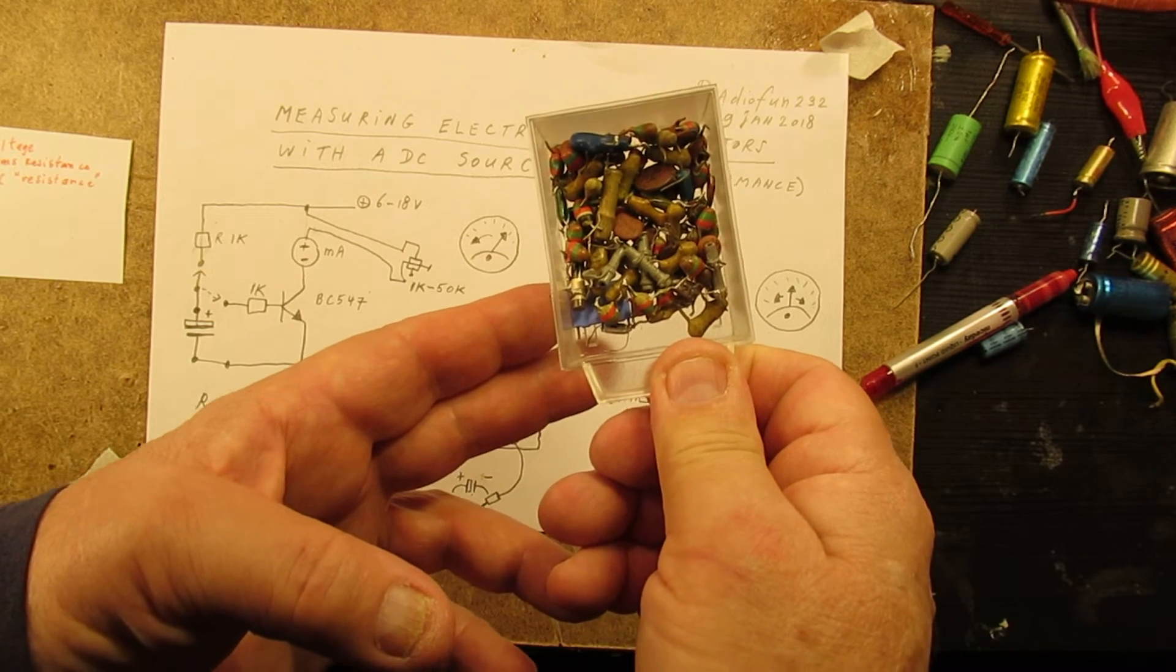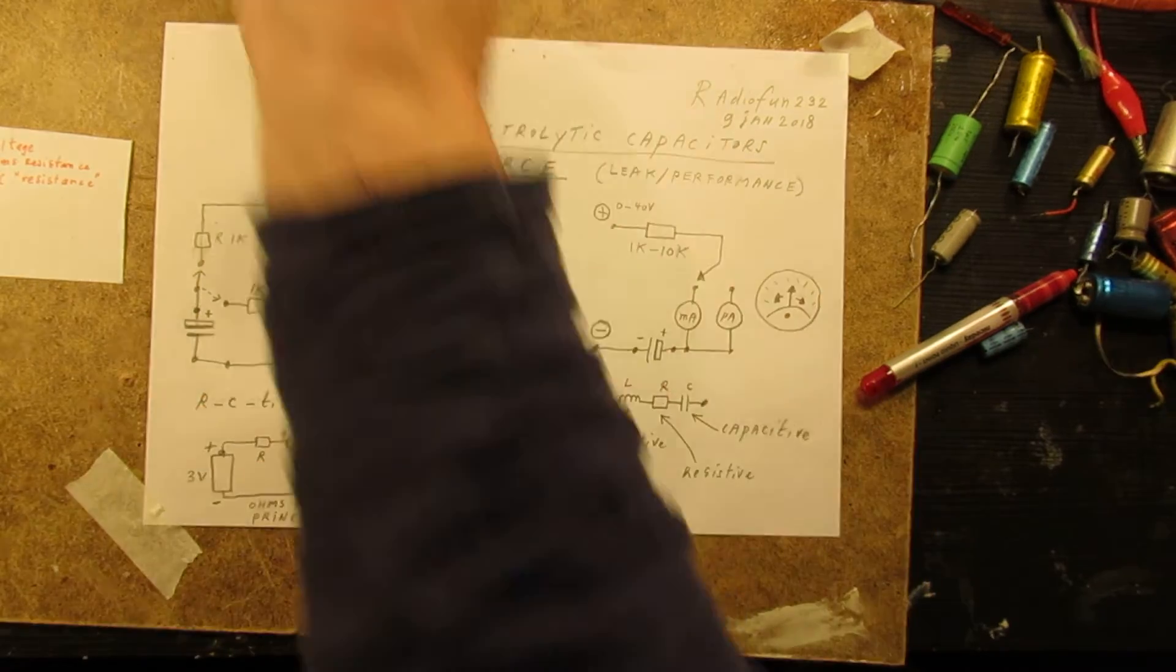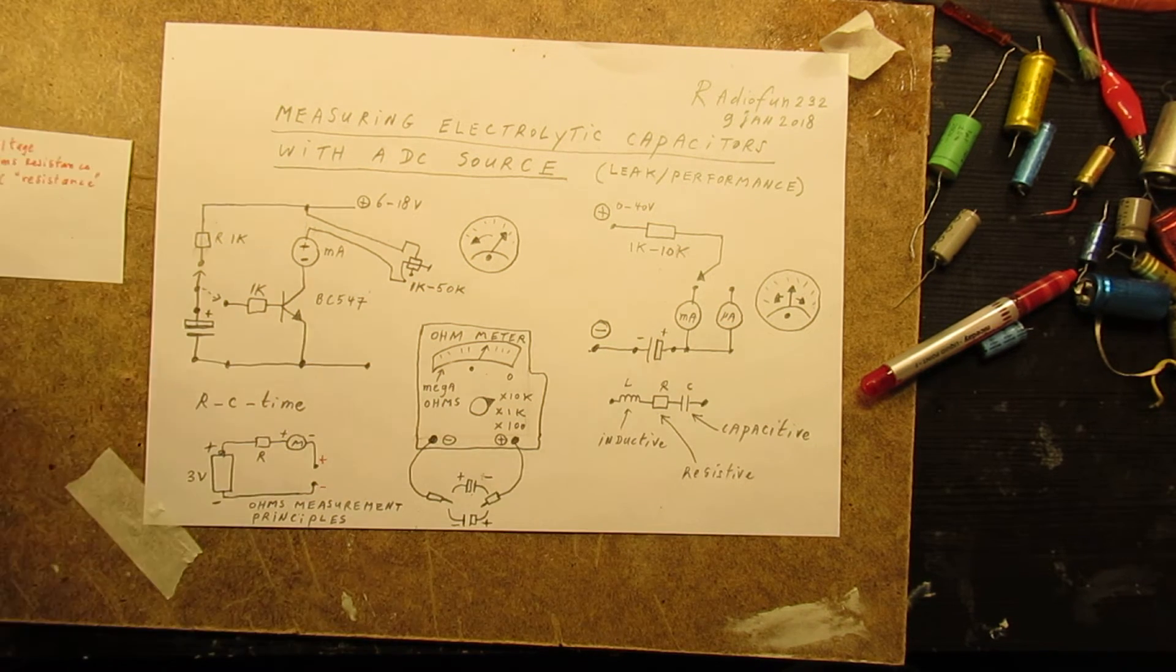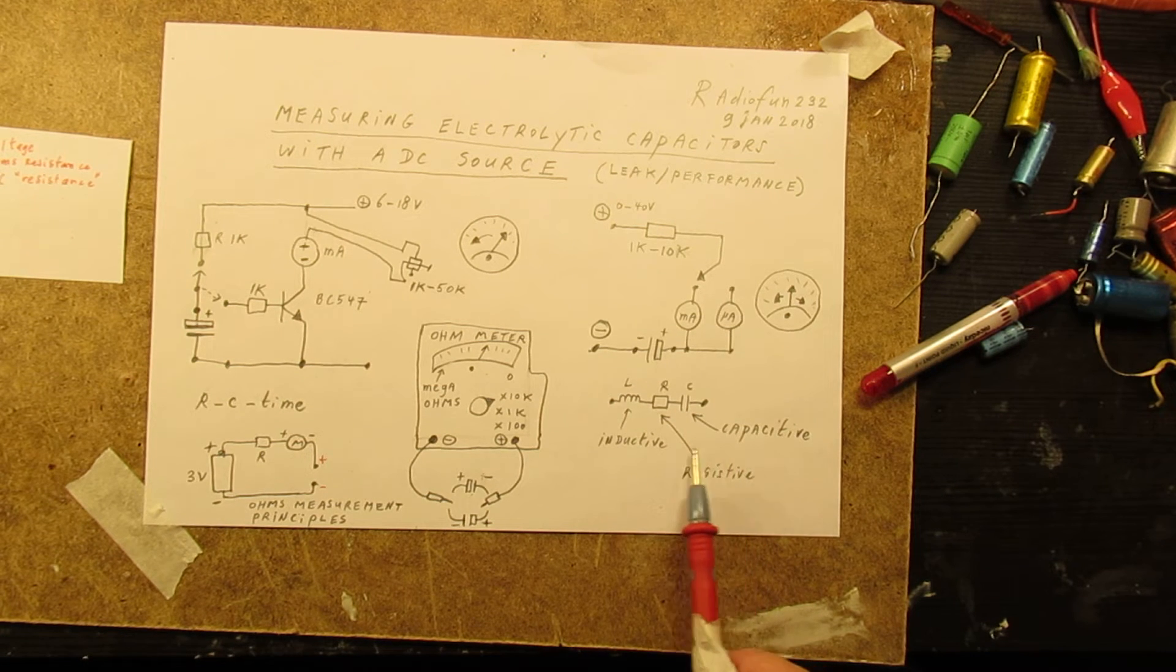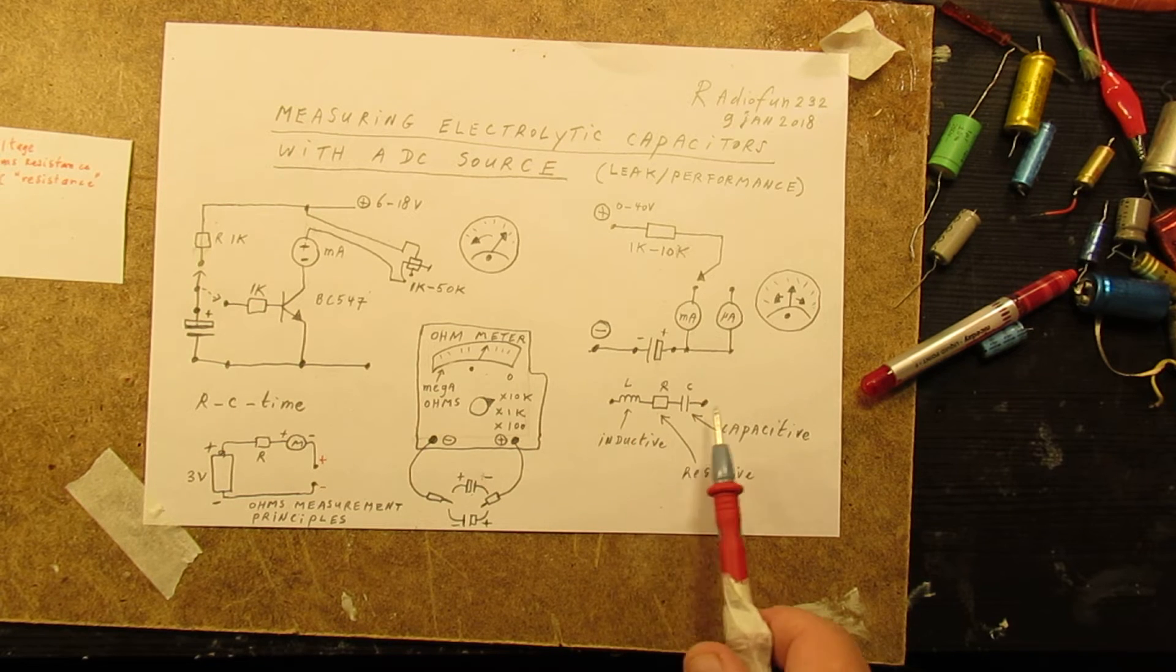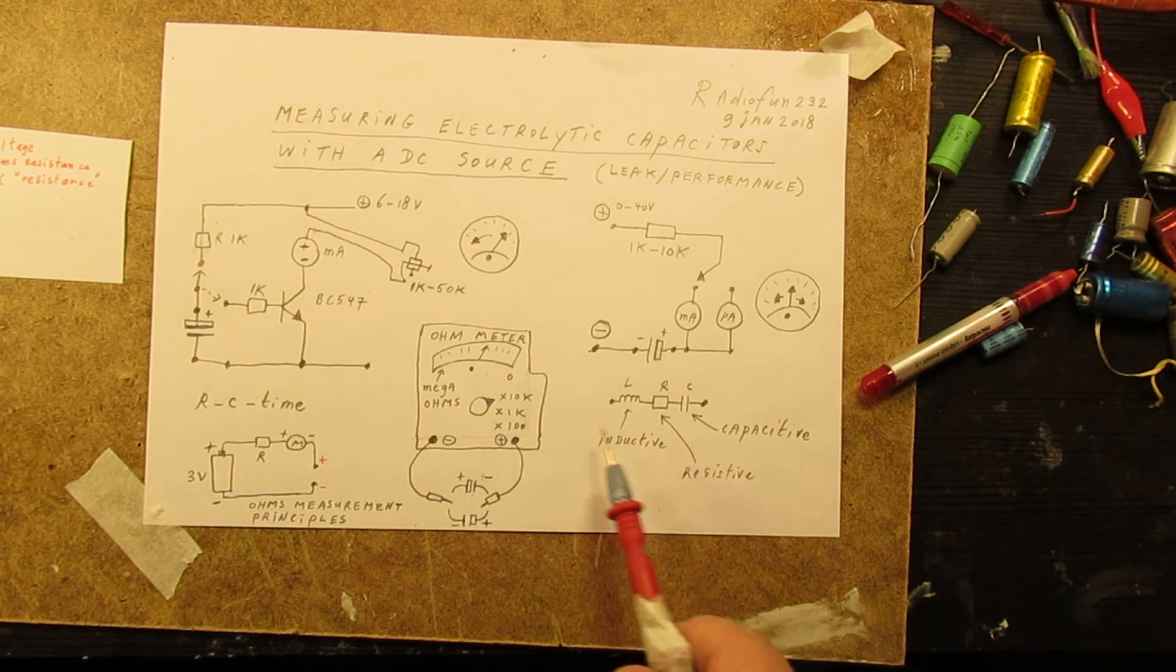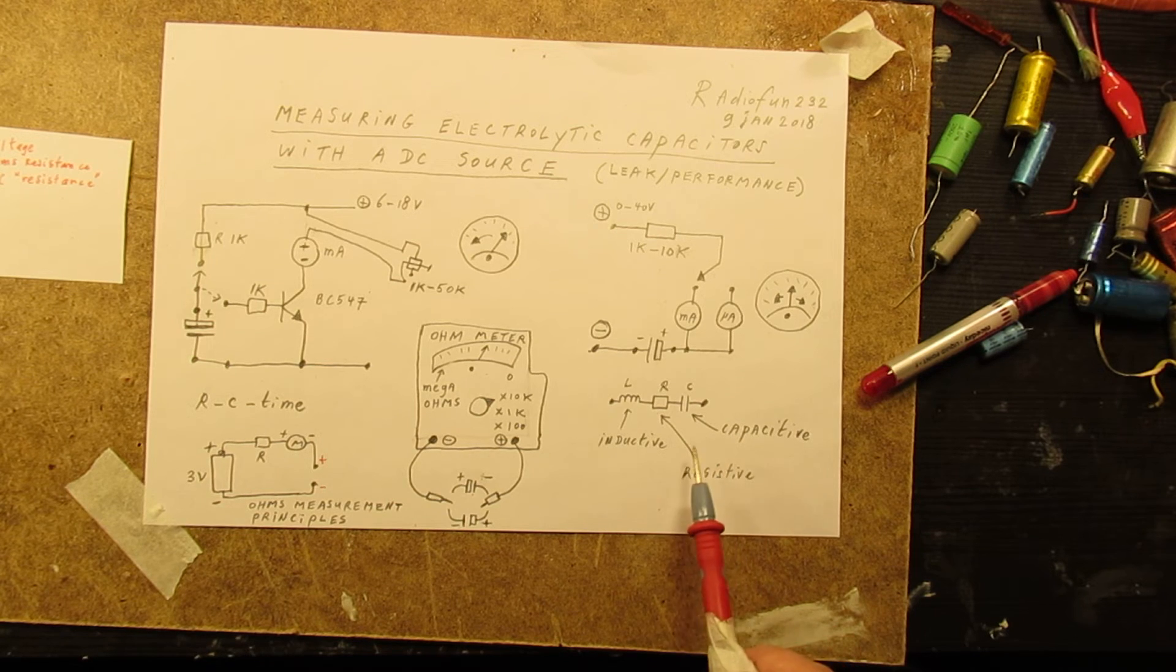Well, that was more or less all to tell. Almost all capacitors have these three electronic properties: inductive, resistive, capacitive. So a capacitor is never only capacitance. There are other sources.